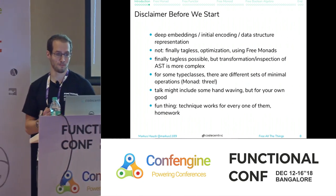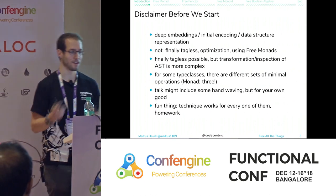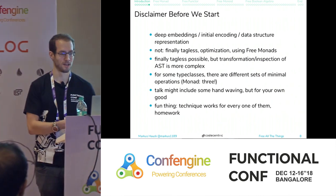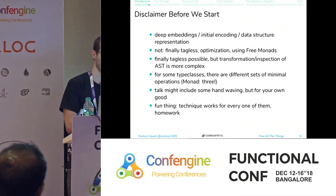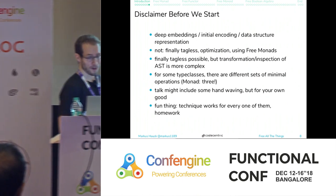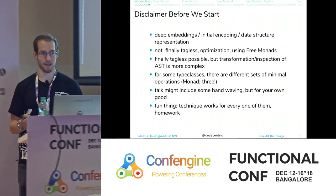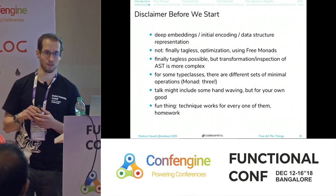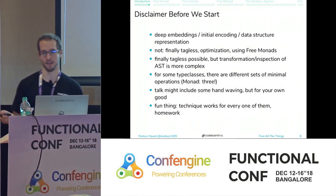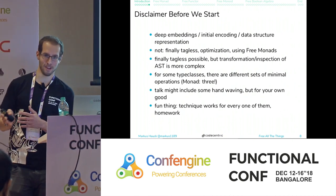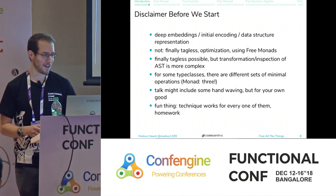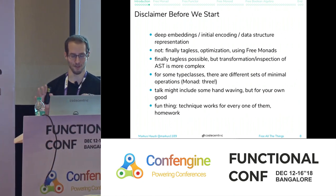Some disclaimers: what I'm doing is also called the deep embedding approach, the initial encoding, or data structure representation — different from final tagless. Final tagless is also possible but more cumbersome for program optimization. For some type classes there are different sets of minimal operations; for monad you can have flatMap and return, or return, join and bind. This technique works for every minimal subset. This talk may include some hand-waving, but it's for your own good.